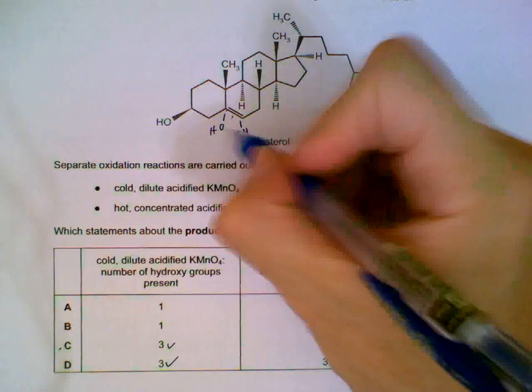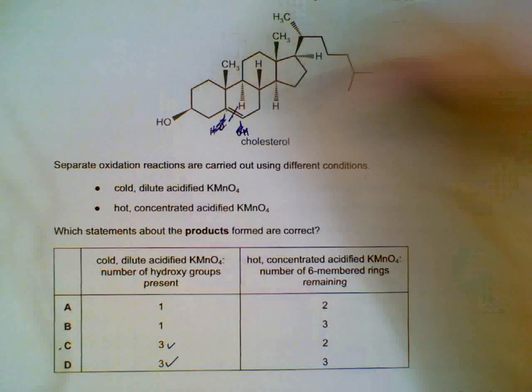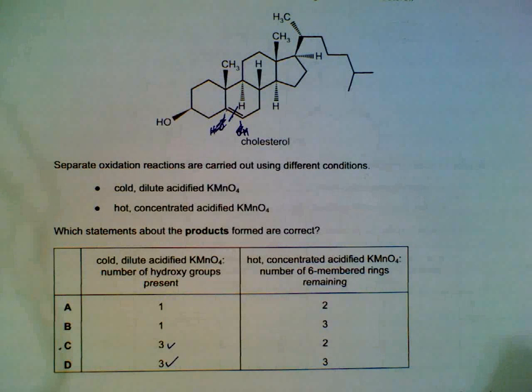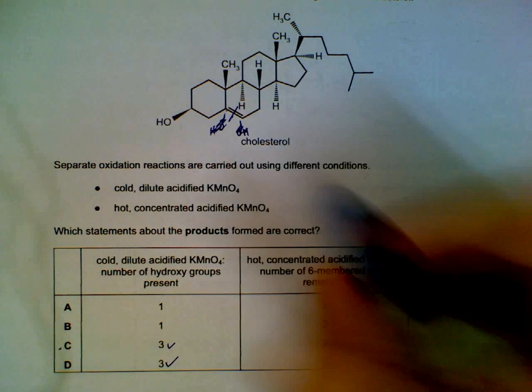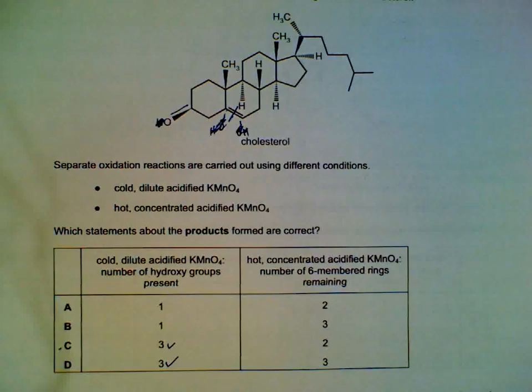If it's hot concentrated, this double bond will be broken. It will be cleaved. This OH will become a ketone.